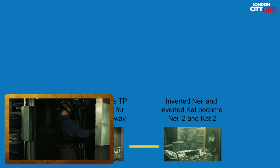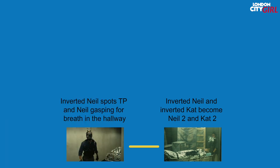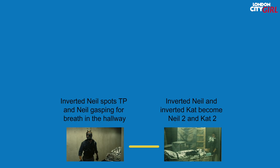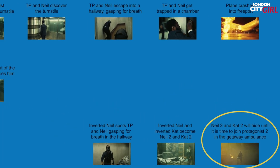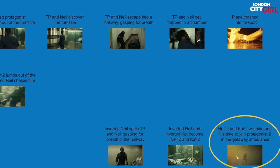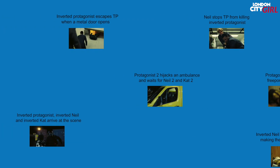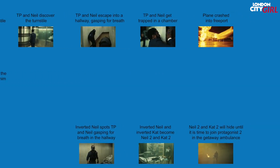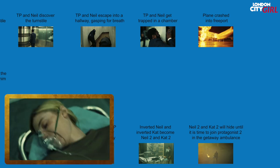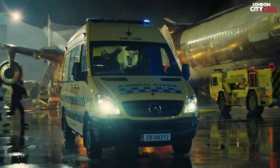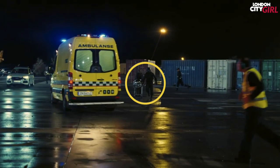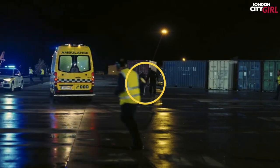Let's call the reverted Neil Neil 2 and reverted Cat Cat 2, as there is already another Neil and Cat living in the same time in the forward-moving world. Neil 2 and Cat 2 are now at the beginning of the series of events, and Protagonist 2 has not yet secured their ambulance to make their getaway, so Neil 2 and Cat 2 wait for events to unfold in the forward direction of time until it is time for them to join Protagonist 2. When they are all back together and driving away in the ambulance, we see their inverted versions moving backwards toward the shipping container that brought them to the scene.